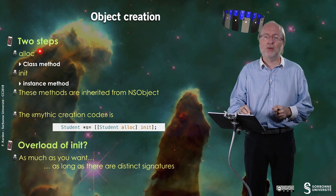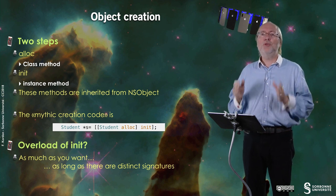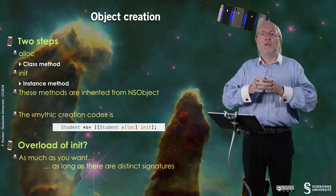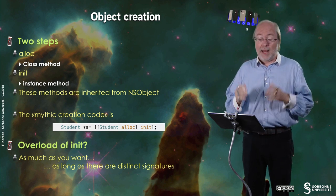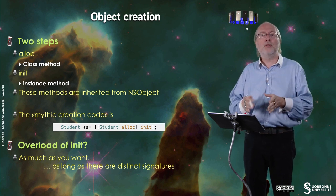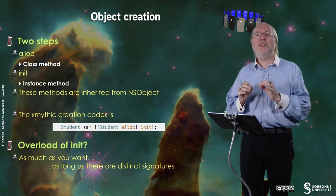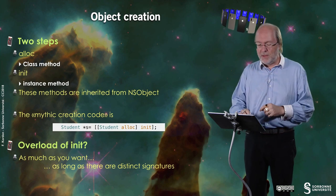The typical sequence to create an object consists in two steps. The first step is alloc. Alloc is a class method, and alloc will just find in the memory enough space to store the object. And then you have another method called init, that is an instance method. And init will initialize, structure this memory according to what's in the object. So the mythic creation code is, for example, for a variable s of type reference to a student, to do student alloc.